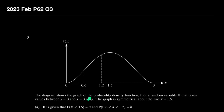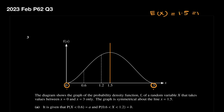February 2023, second variant, question number 3. The diagram shows the graph of a probability density function (pdf) of a random variable X taking values between 0 and 3 only. The graph is symmetrical about the line x equals 1.5. For any symmetric distribution, the expected value equals the midpoint of the two endpoints, which is 1.5, and it also equals the median since 50% of the distribution lies below and 50% above it.